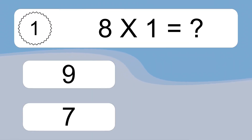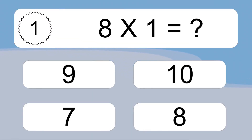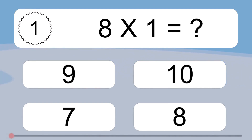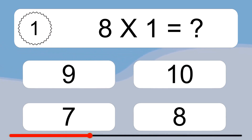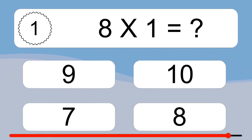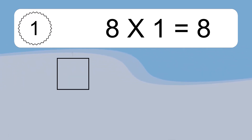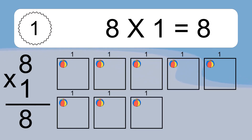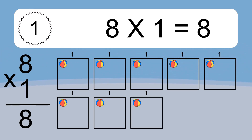8 times 1 equals what? 8 times 1 equals 8. We have 8 boxes and each box has 1 colorful ball inside. If you count all the balls in all the boxes together, you will have 8 times 1 balls. This equals 8 balls.